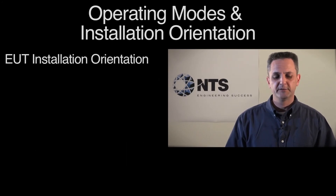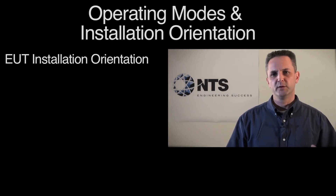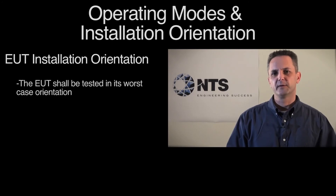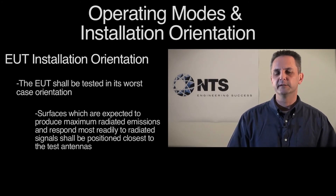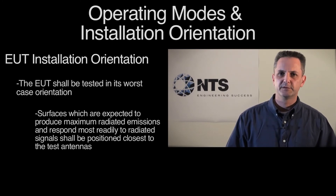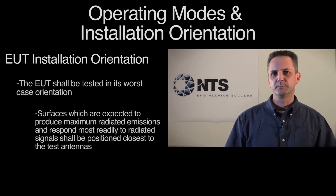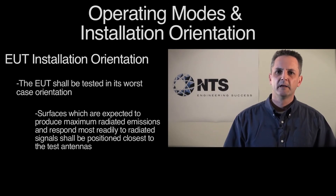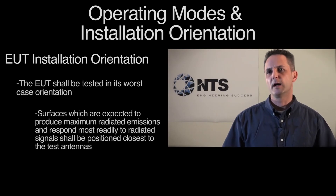Next is EUT installation and orientation. MIL-Standard 461F doesn't specify exactly how the equipment should be oriented, but it does specify that the orientation which could produce the greatest emissions, or be most vulnerable to a radiated or conducted field, shall be positioned closest to the transmit antenna — mainly important for radiated susceptibility and radiated emissions testing. Earlier revisions of the standard allowed near-field probing, using a spectrum analyzer and a near-field loop waved slowly over the equipment to determine peak amplitudes, but due to improper use, that requirement has been dropped in MIL-Standard 461F.